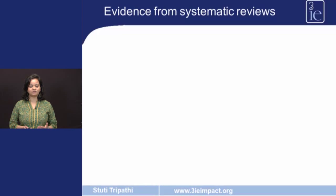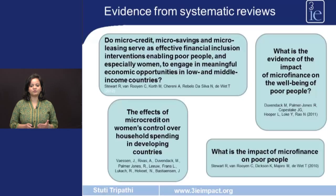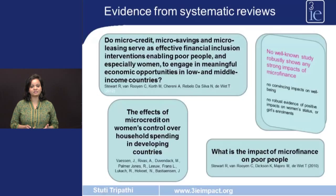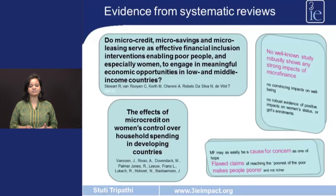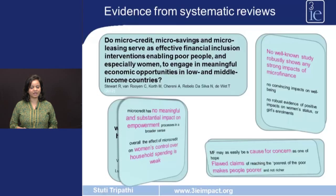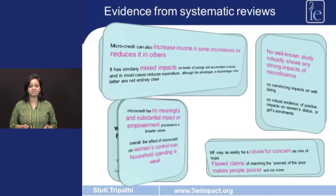Evidence from systematic reviews echoes the findings of the Spandana study. One review states that there is no well-known study that robustly shows any strong impacts of microfinance. On the contrary, microfinance has been a cause of concern — it has made flawed claims, made people poorer, had no impact on women's empowerment, and its impacts, if any, have at best been mixed.